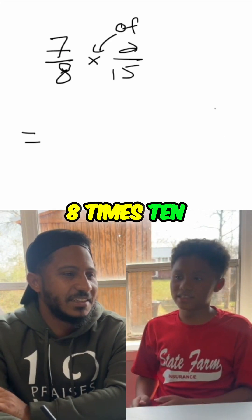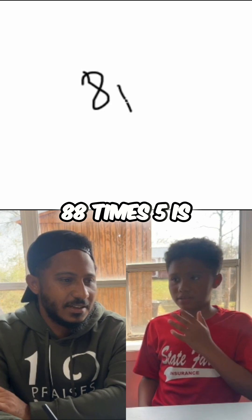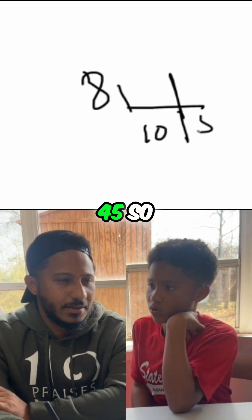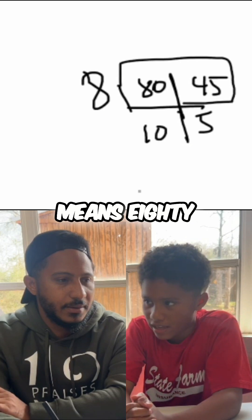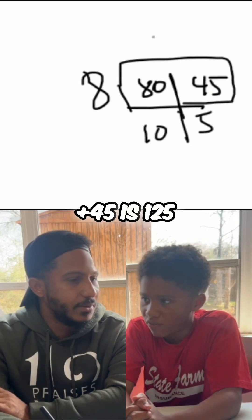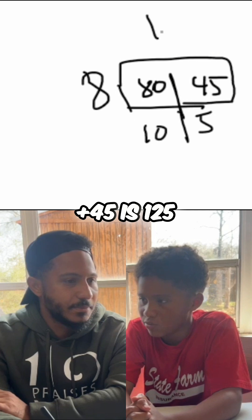Eight times five is forty-five. So, let's see. For me. So, eight, that means eighty. Plus forty-five is one hundred twenty-five.